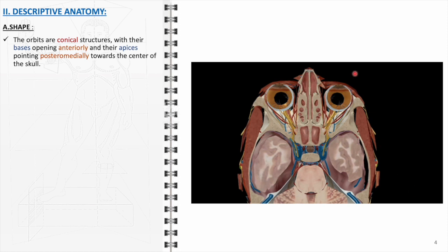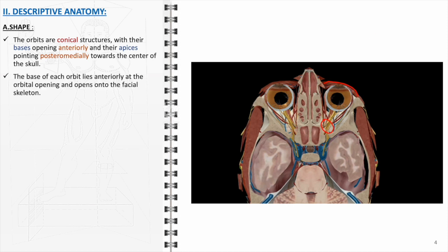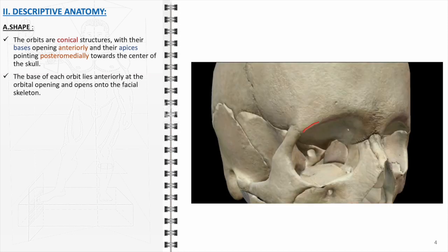The orbital cavities, often described as conical structures, present a fascinating aspect of craniofacial anatomy. Their shape is strategically designed with the bases of these cones opening anteriorly, providing a wide field of vision and protective housing for the eyes. The apices are oriented in a posteromedial direction, converging towards the central part of the skull. This unique orientation plays a vital role in directing the nerves and blood vessels that connect the eyes to the brain.